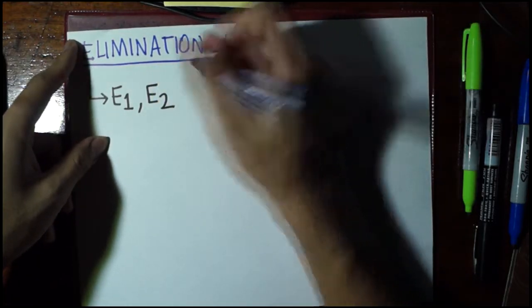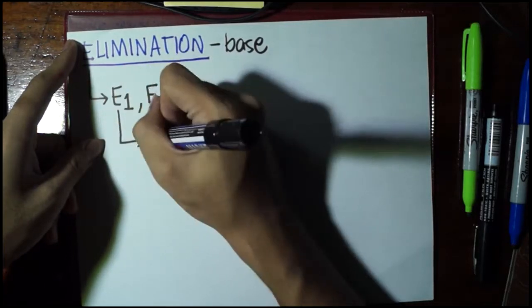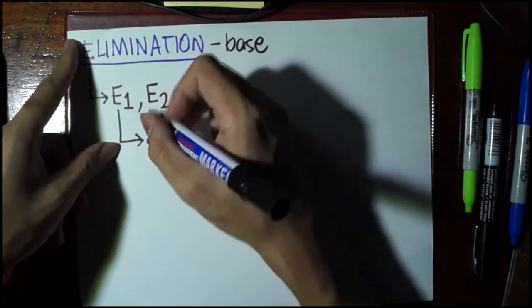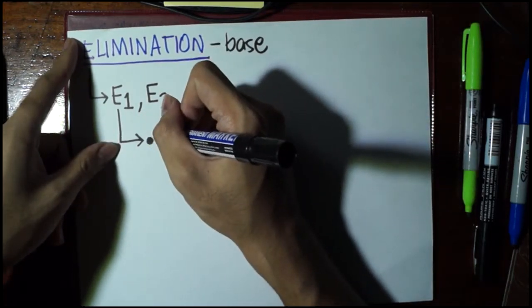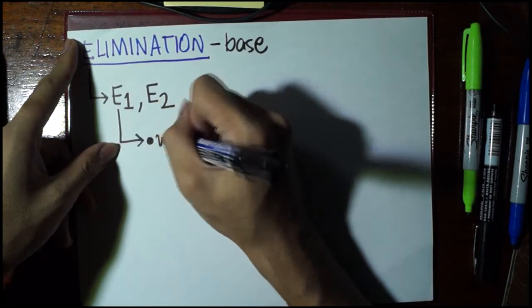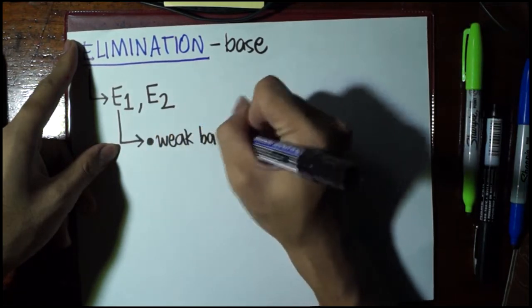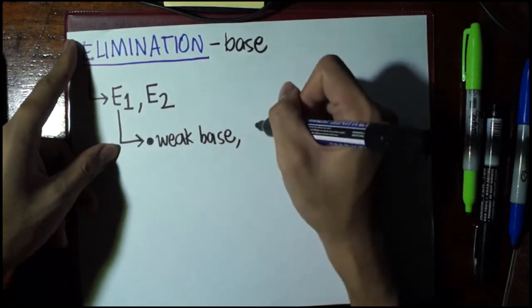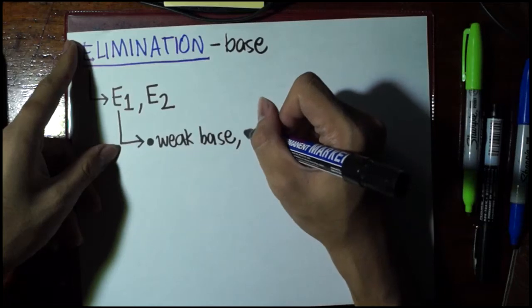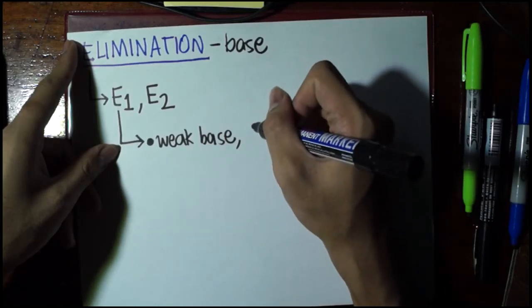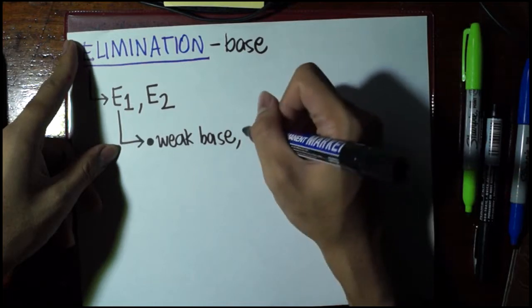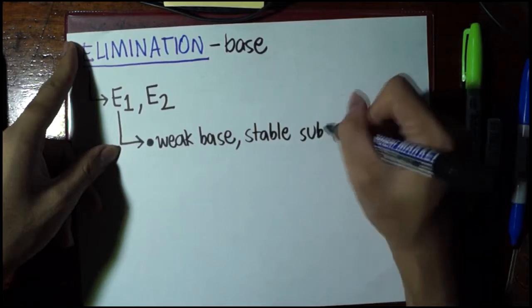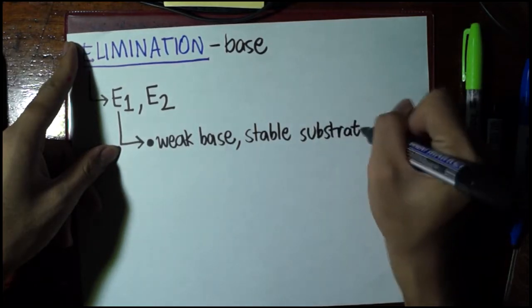Just like in SN1, E1 is a two-step process wherein the first and rate determining step is the leaving group leaving, and then the base attacks, meaning that the base cannot attack unless the leaving group leaves. That's why we have here a weak base. And since we need the carbon where the leaving group has left, we need it to be stable, we need here a stable substrate, specifically the alpha carbon.